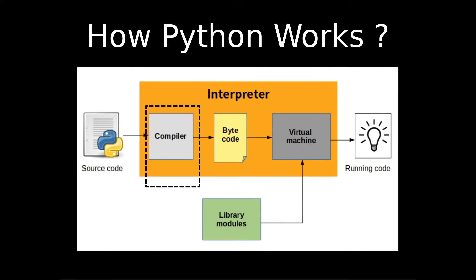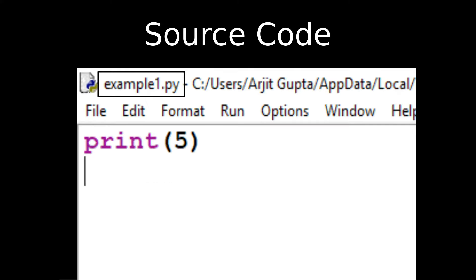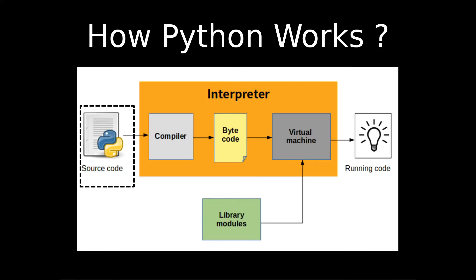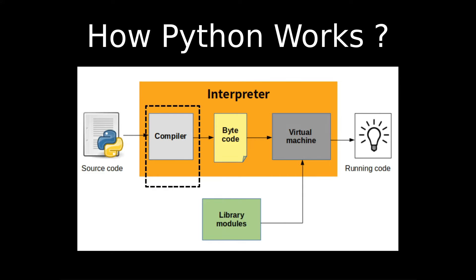Next is the compiler phase. What the compiler does is check for syntax errors in your source code, and at the same time convert your source code into bytecode. Remember, source code and bytecode are different. The compiler both checks for errors and converts the code. For example, if you write print(5 and forget to close the bracket, that's a syntax error — the compiler will throw an error.